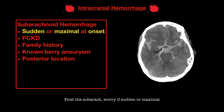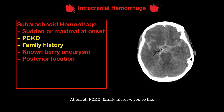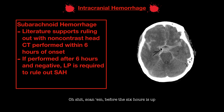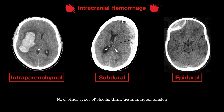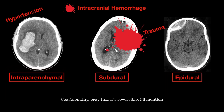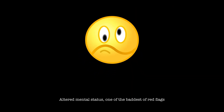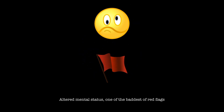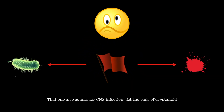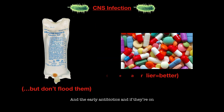First, the subarachnoid — worry if sudden or maximal at onset. PCKD, family history — like, oh shit, scan them. Four to six hours is up from the symptom to the scan; if not, an LP is what's next. Now other types of bleeds: think trauma, hypertension, coagulopathy, anticoagulants — it's reversible, I'll mention. Altered mental status — one of the baddest red flags — that one also counts for CNS infection. Get the bags, crystal order in the early antibiotics.